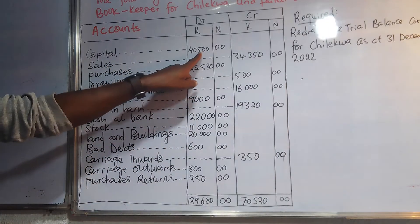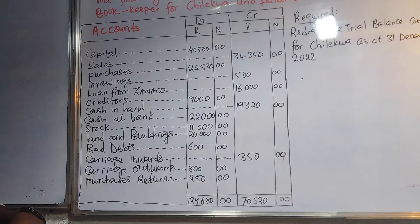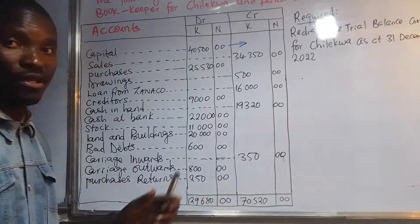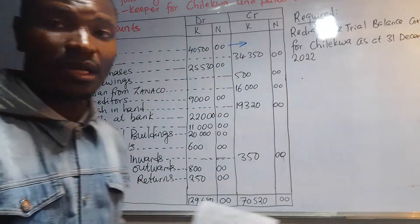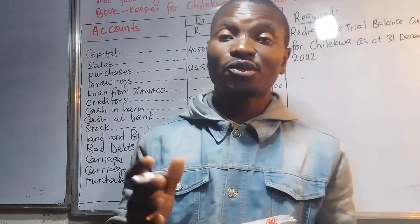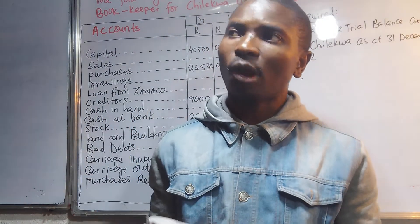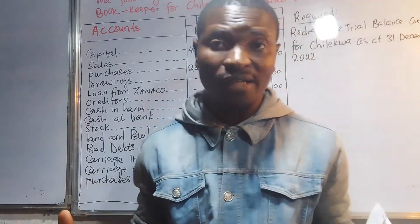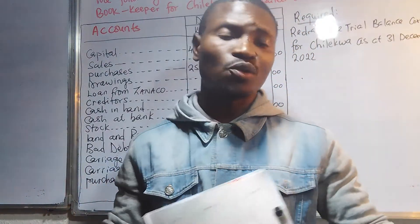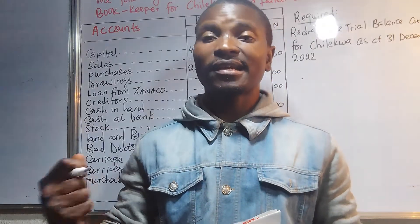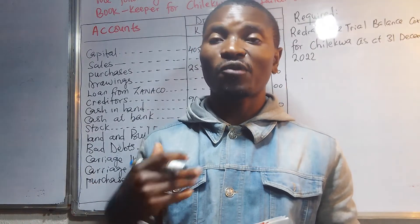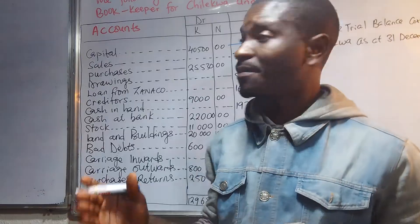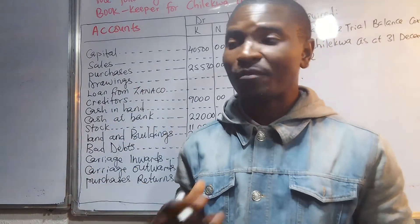Capital should go to the credit side of the trial balance. Capital is something that does not strictly belong to us — it represents resources we need to start something, whether in the form of money or assets. In accounting, capital goes to the credit side because most businesses do not start with resources they personally own.